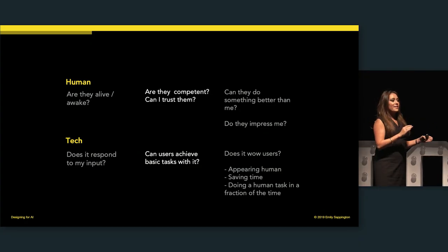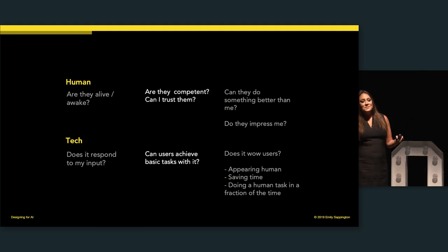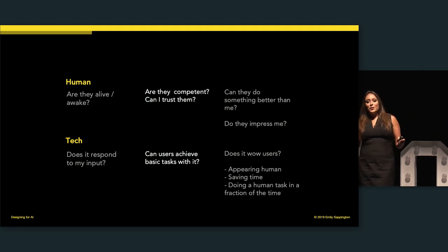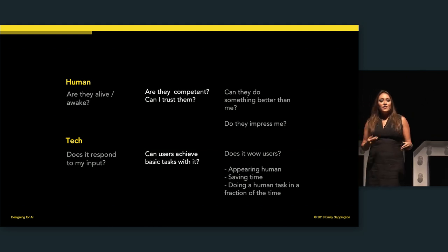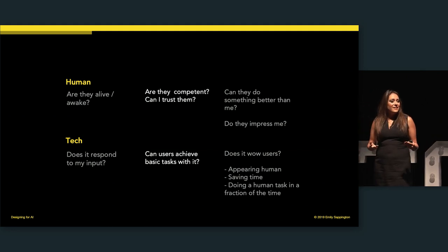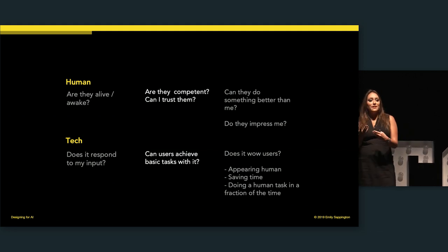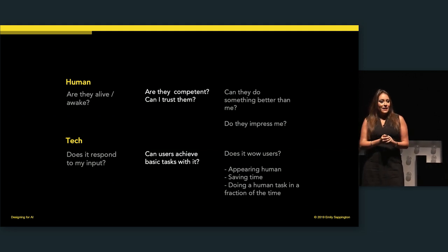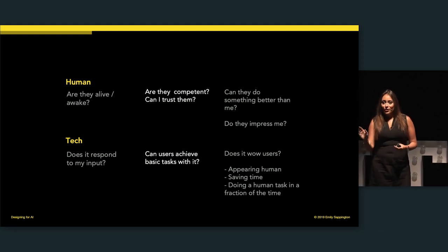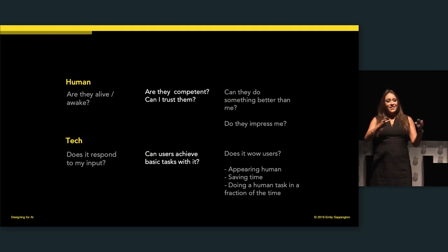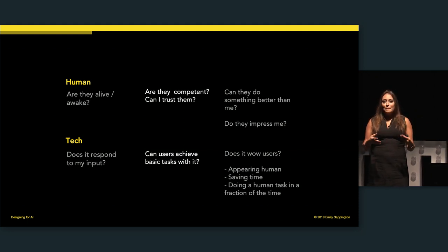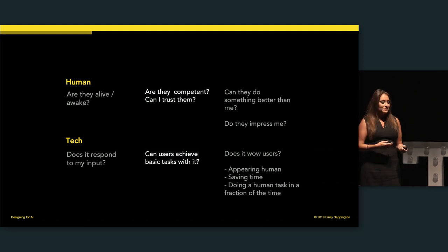We've passed the 'is it even responding to me' phase. Now let's talk about: is it competent? Is this piece of technology competent, or is another person competent? If I were meeting somebody, I might wave at them first and then they'd make eye contact — that's the first stage. The second stage is about general competency: can I have a conversation? Can I engage with it?